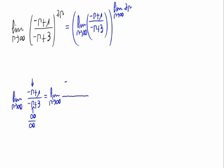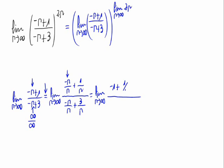We would have minus n divided by n, plus 1 divided by n, over minus n divided by n, plus 3 divided by n. That equals the limit when n approaches infinity of minus 1 plus 1/n, divided by minus 1 plus 3/n. Since everything divided by n goes to 0 as n approaches infinity, we have minus 1 plus 0 over minus 1 plus 0.